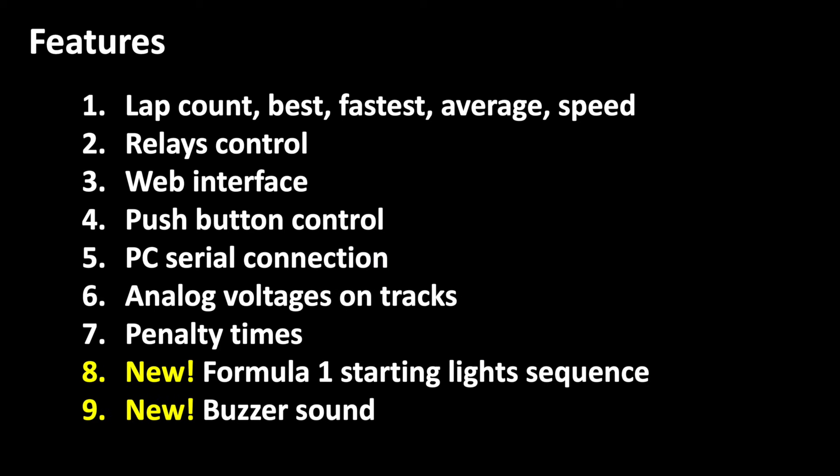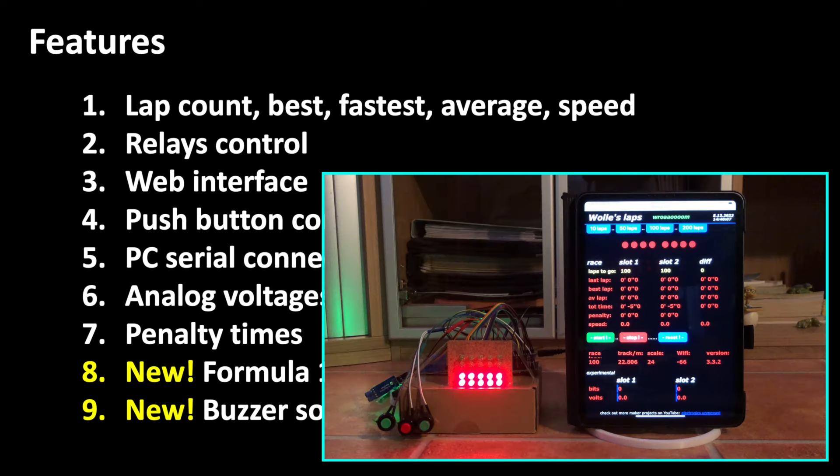If one pilot drives during the red phase his penalty time is automatically recorded as long as sensors are measuring a voltage on the rail. In this way an early start is also detected. And of course the Formula 1 start lights are very cool.